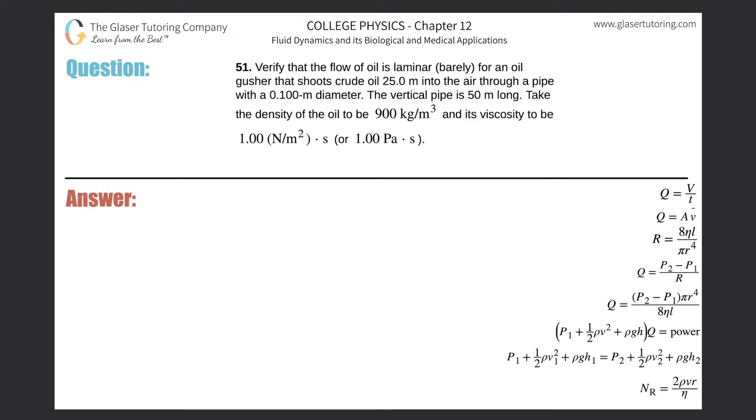Number 51: Verify that the flow of oil is laminar, barely, for an oil gusher that shoots crude oil 25 meters into the air through a pipe with a 0.1 meter diameter. The vertical pipe is 50 meters long. Take the density of oil to be 900 kg/m³ and its viscosity to be 1 N/m²·s.